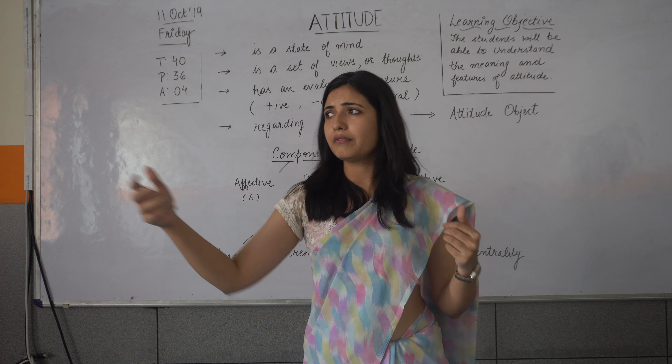And the last feature is centrality. Let us take the example of Gandhiji — he was a very non-violent person. For him, this attitude was the central attitude of his life. Everything that he did was revolving around this attitude. Therefore, the four features of attitude are: balance, extremeness, simplicity or complexity, and centrality.